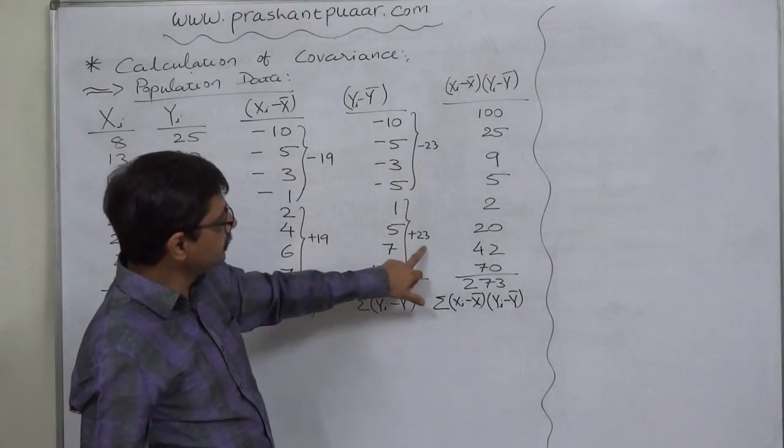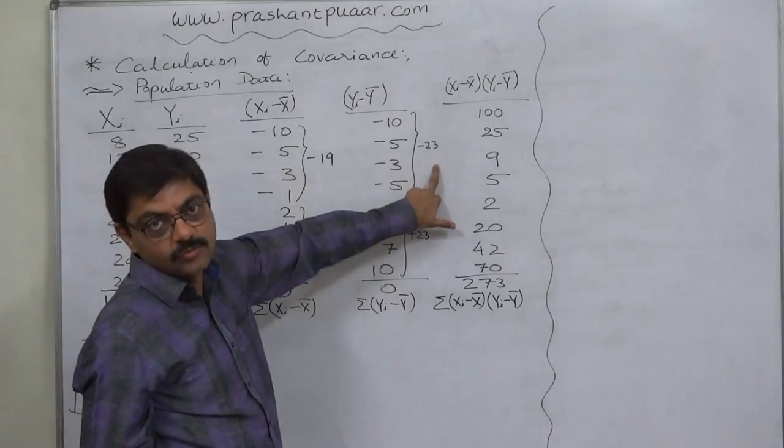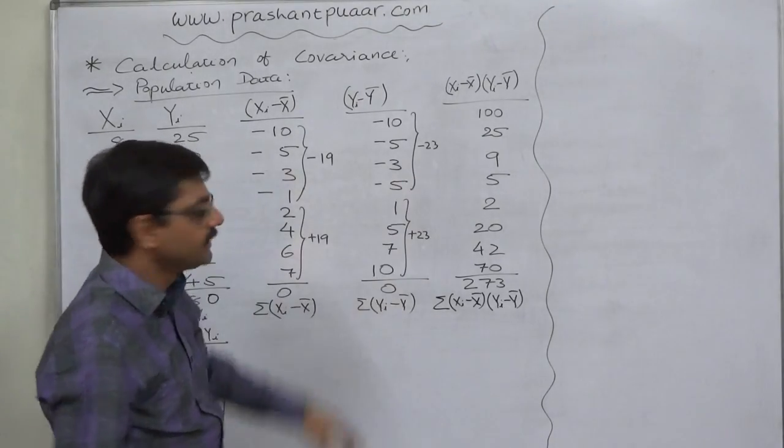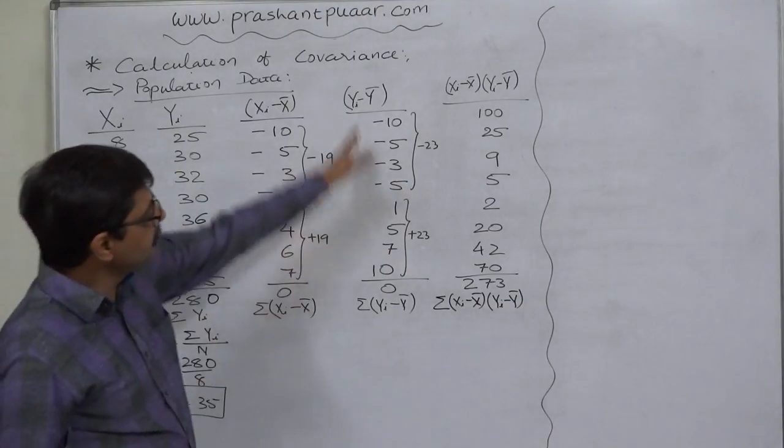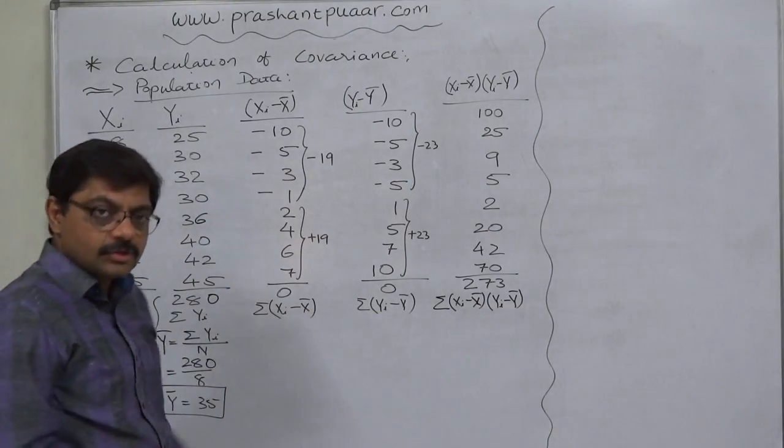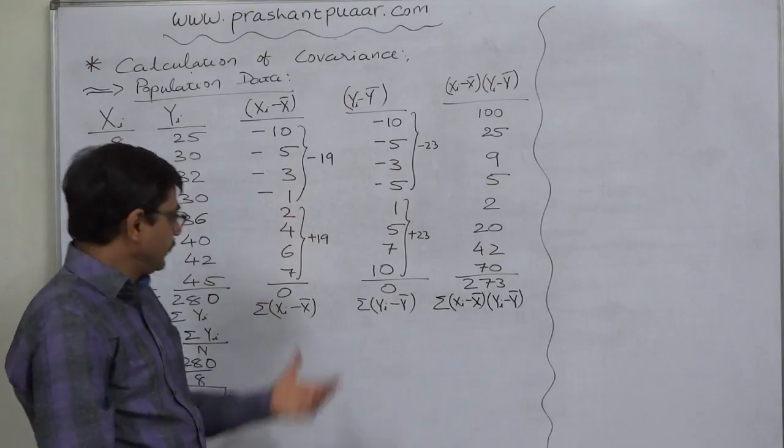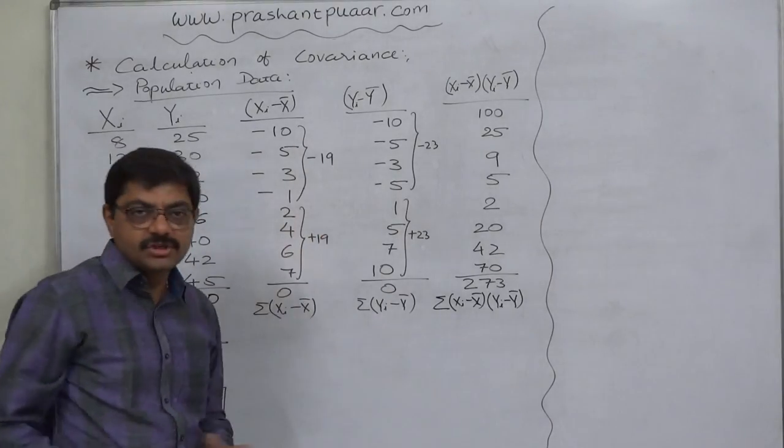The positive deviations give total positive 23, negative deviations give total minus 23, ultimately, the grand total comes to 0. That means again, we can believe that all these values are correct. So, we can go forward as we have all the correct deviations.